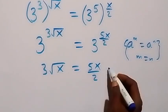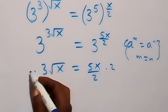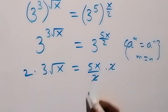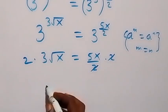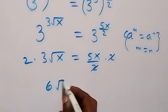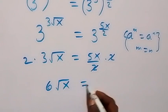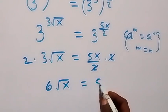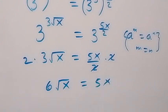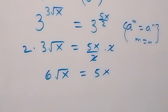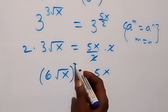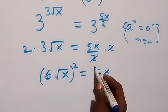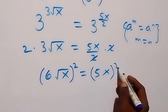Then, multiplying both sides by 2 — the 2 cancels out on the right — this becomes 6 root x now equals to 5x. Then let's square both sides to remove the square root. Square everything on the left and square everything on the right.